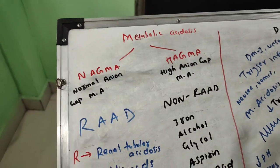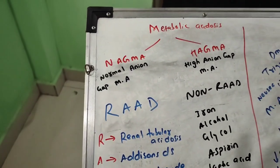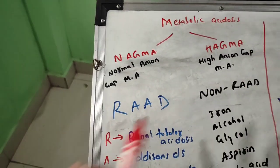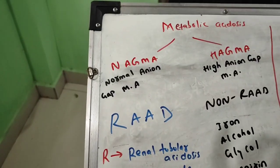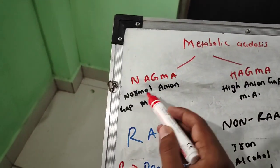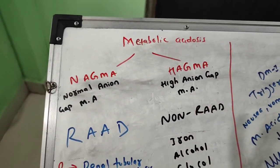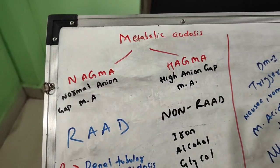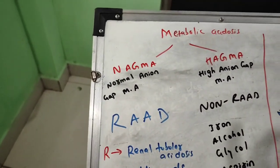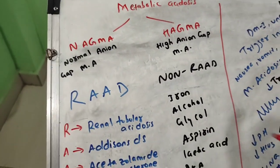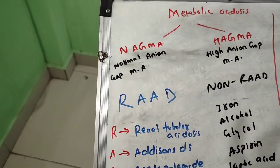First, I would like to discuss NAGMA and HAGMA. You need to remember which is HAGMA and which is NAGMA. There is always one MCQ on this in the examination. Metabolic acidosis is divided into two types: NAGMA, which is Normal Anion Gap Metabolic Acidosis, and HAGMA, which is High Anion Gap Metabolic Acidosis. They will simply ask which of the following shows high anion gap metabolic acidosis.